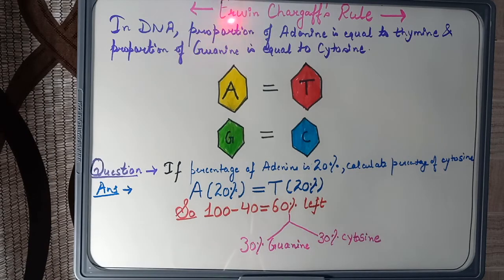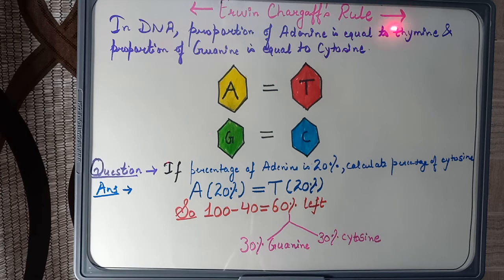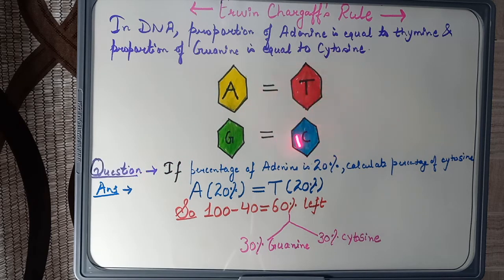Now let us study Chargaff's rule. According to Chargaff's rule, in DNA, the proportion of adenine is always equal to thymine, and the proportion of guanine is always equal to cytosine.